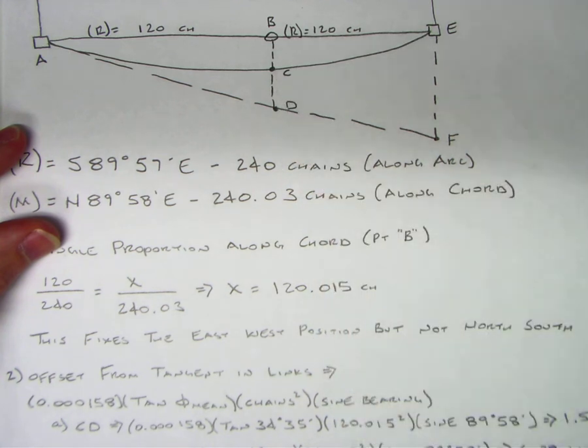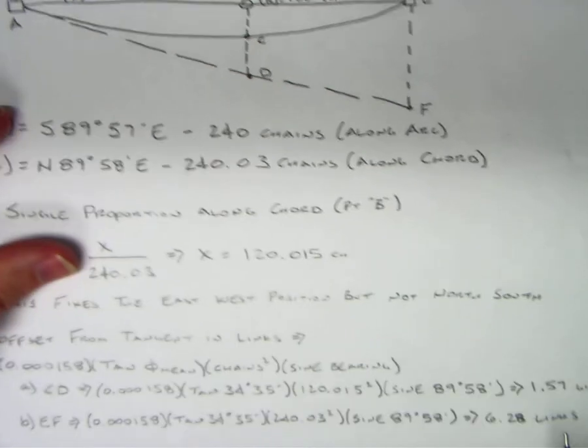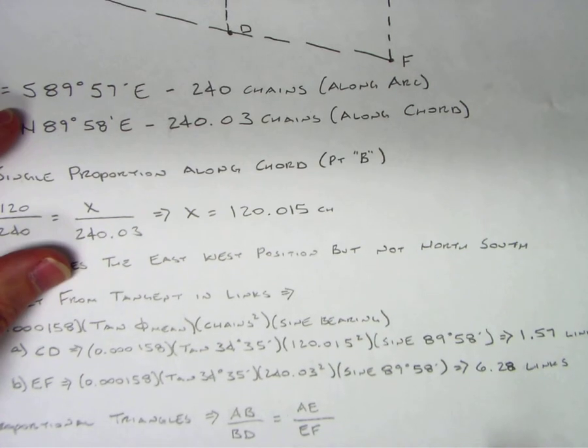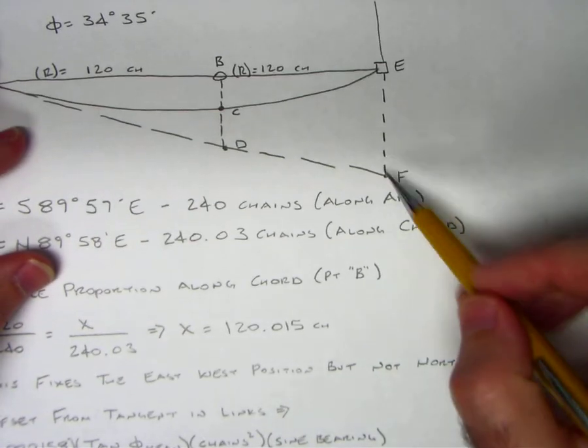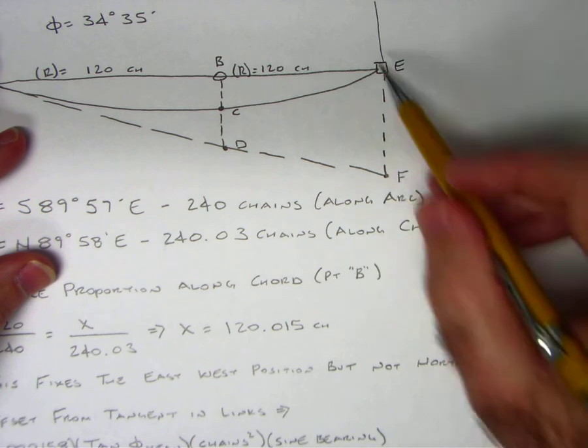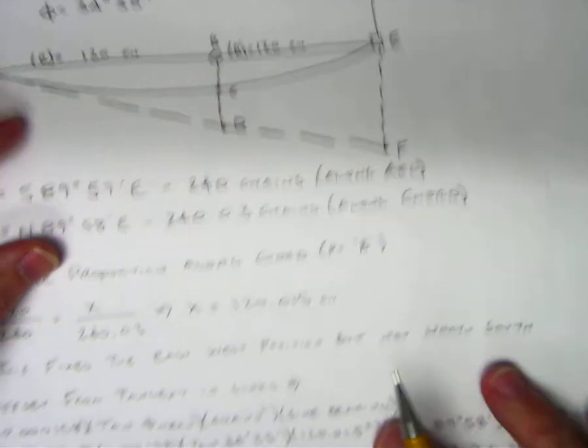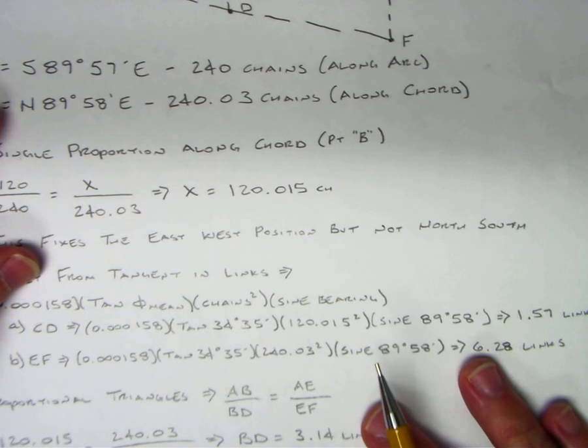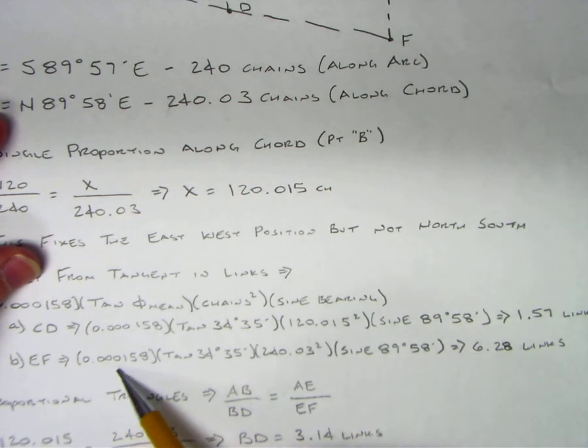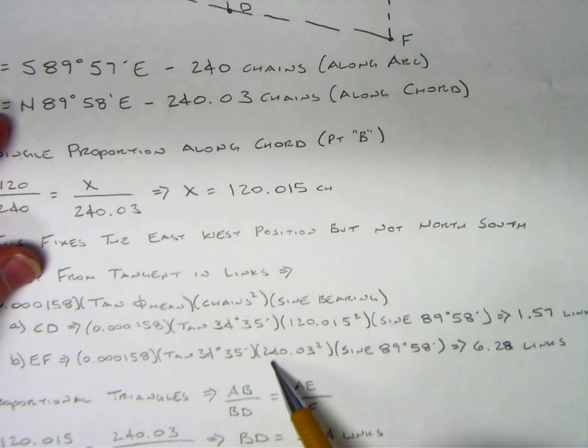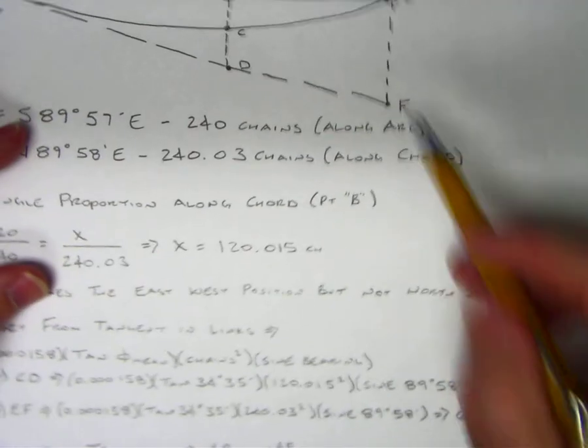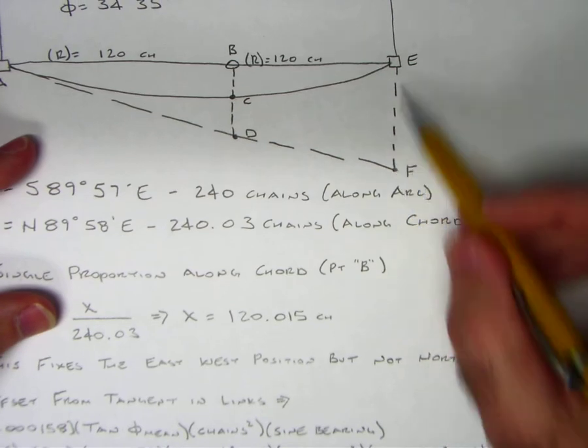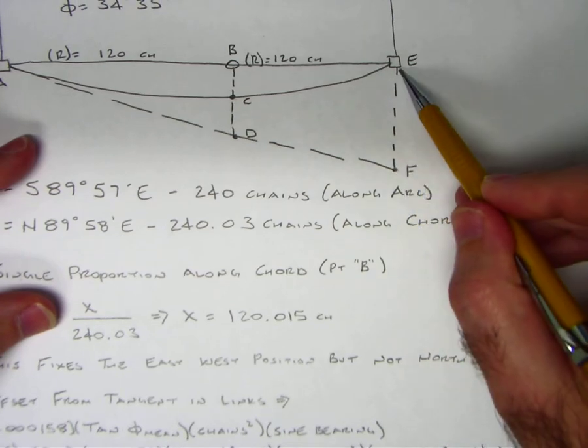From D to C is 1.57 links. Next we're going to do F to E. Same equation: 0.000158 times tangent of 34 degrees 35 minutes times 240.03 squared times sine of 89 degrees 58 minutes, that's 6.28 links. From F to E is 6.28 links.